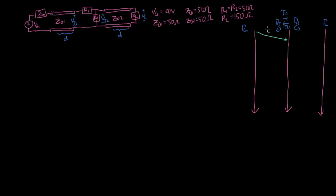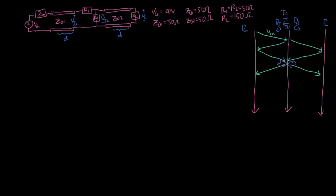We start out with our incoming wave V_in going in. Once it hits the first junction, part of it transmits and part of it reflects. Once that reflected part hits the generator, part of it reflects back. Once the transmitted part hits the load, that reflects. The next wave is a combination of the reflection off this wave and the transmission off that wave. Similarly, the next wave going across the second transmission line is also a combination of the reflected wave and the transmitted wave.